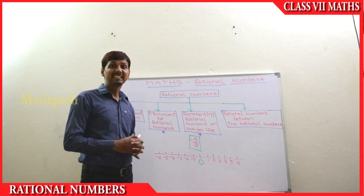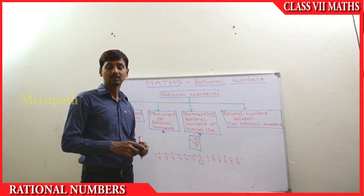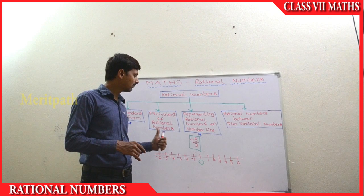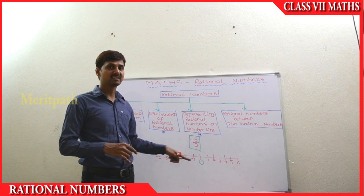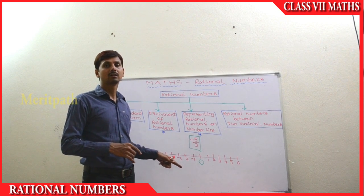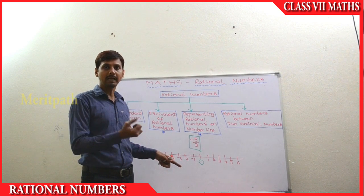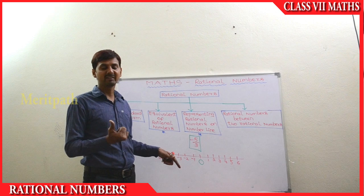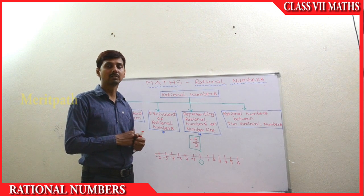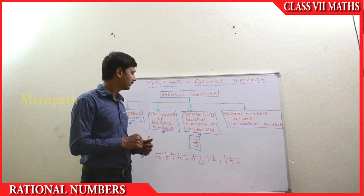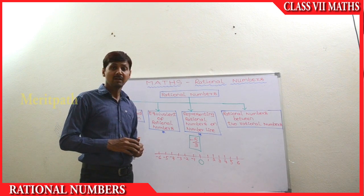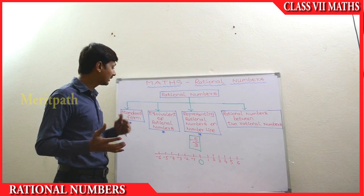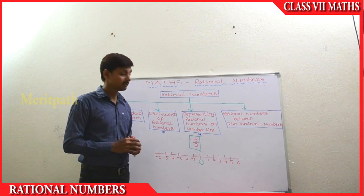The number line: the positive numbers and negative numbers along with zero are called the integer line. We have learnt about it in previous classes. Now we need to represent a rational number — a negative rational number — on the number line.